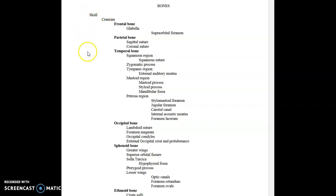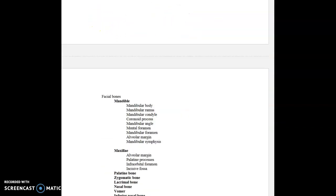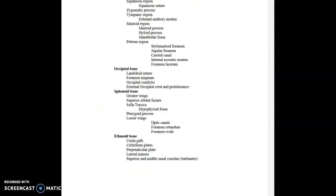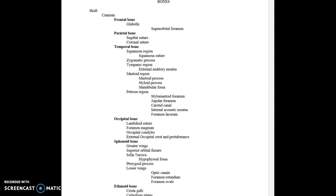The skull is divided up into the cranium — the cranial portion, the part that kind of covers the brain — and the facial bones. What we're going to do first is look at the cranium and the bones affiliated with the cranium.